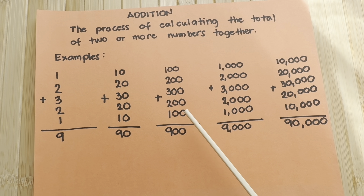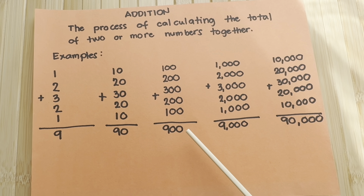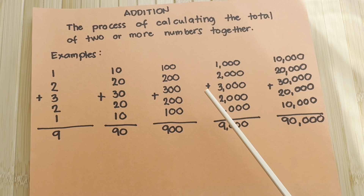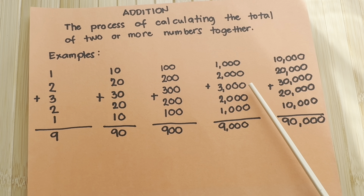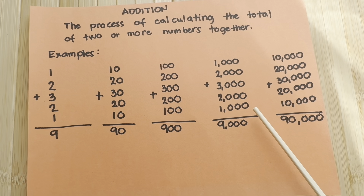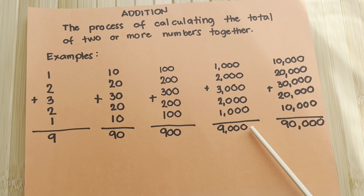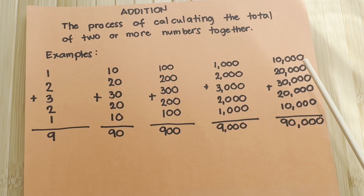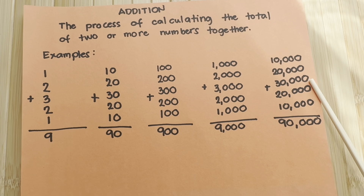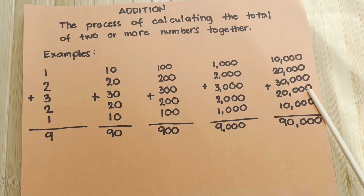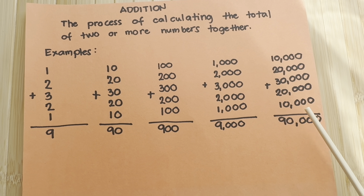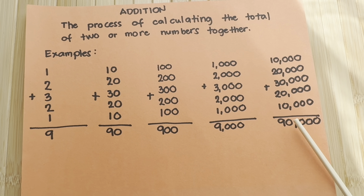100 plus 200 plus 300 plus 200 plus 100 is equals to 900. Next, 1,000 plus 2,000 plus 3,000 plus 2,000 plus 1,000 is equals to 9,000. 10,000 plus 20,000 plus 30,000 plus 20,000 plus 10,000 is equals to 90,000.